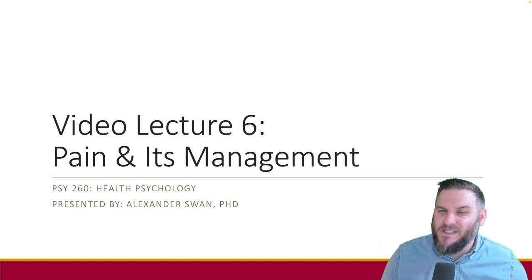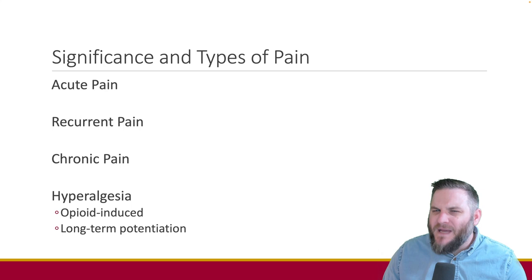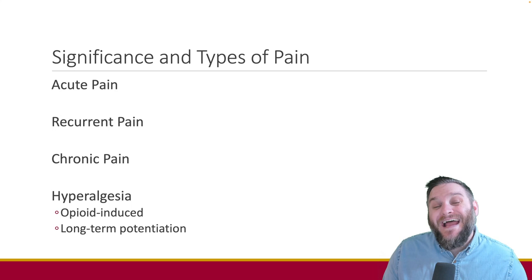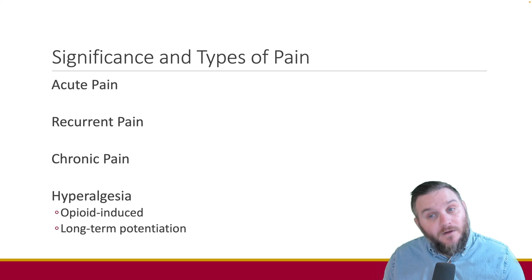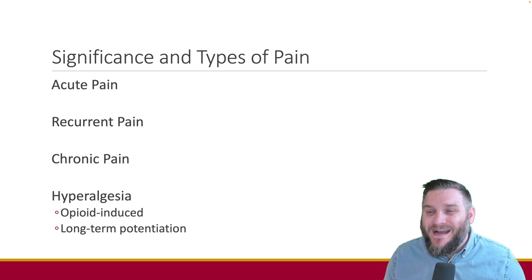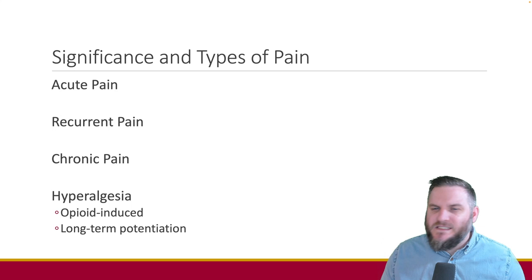Pain comes in various forms and durations. We categorize it as acute, recurrent, or chronic based on its duration. Acute pain is short-term and typically results from an injury or illness. Recurrent pain may come and go over time, while chronic pain persists for extended periods, often lasting beyond the expected healing time. Pain's subjective nature makes it challenging to develop objective psychophysiological measures.